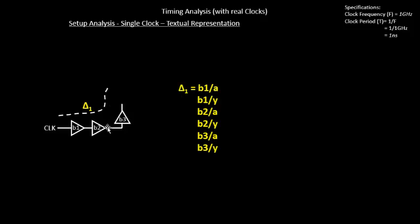The launch clock network delay Delta 1 will be represented as: B1 of A (the net delay of the first net), B1 of Y (the cell delay of the first buffer considering the next net), B2 of A (the net delay of the second net), B2 of Y (the second cell delay), B3 of A (the third net delay), and B3 of Y (the third cell delay). So each buffer contributes a net delay (A) and a cell delay (Y).